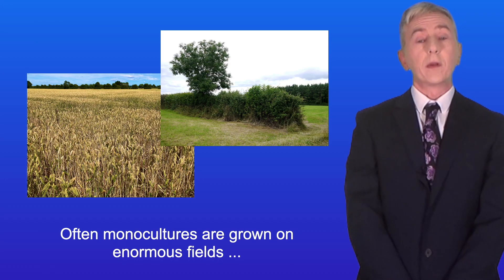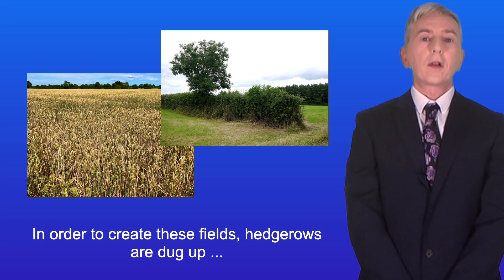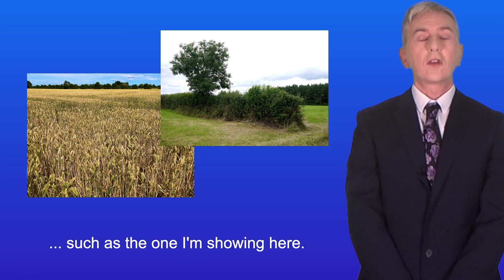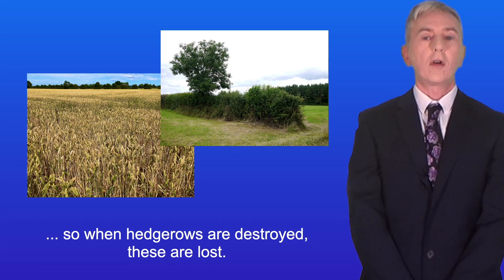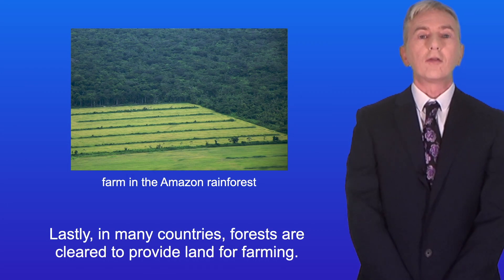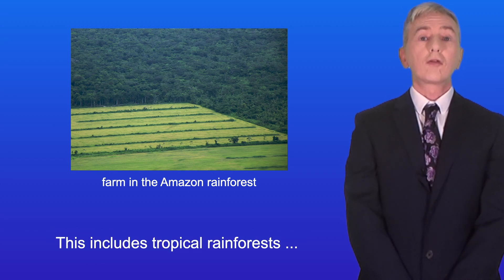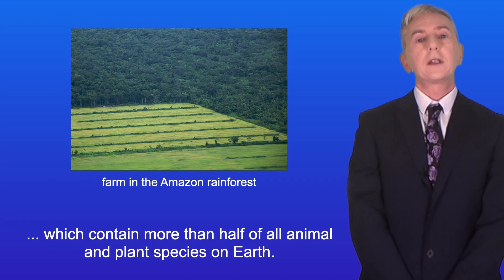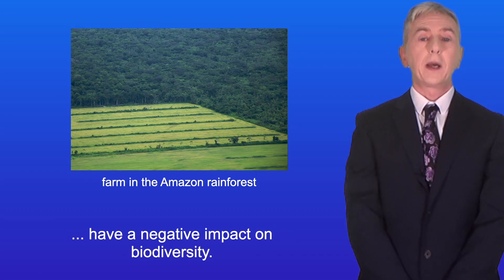Often monocultures are grown on enormous fields, which makes harvesting more efficient. In order to create these fields, hedgerows are dug up, such as the one I'm showing here. Hedgerows contain a rich diversity of plants and animals, so when hedgerows are destroyed, these are lost. And lastly, in many countries forests are cleared to provide land for farming. This includes tropical rainforests, which contain more than half of all animal and plant species on earth. So modern farming methods have a negative impact on biodiversity.